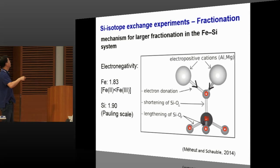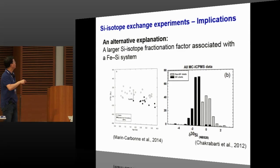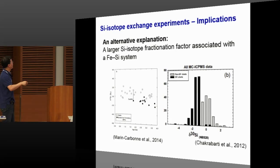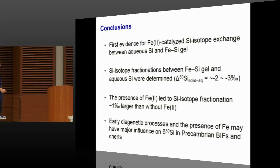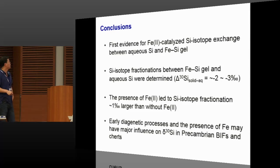Recalling those two earlier figures, our experiment seems to suggest there are different fractionation factors associated with precipitation of pure silica — as represented by the chert samples — and a larger fractionation associated with banded iron formation samples. That may be why we see lower delta silicon 30 values in the banded iron formation. In conclusion, our experiment provides the first evidence for Fe2+-catalyzed silicon isotope exchange, and we determined that the equilibrium fractionation factor between iron silica gel and aqueous silica is about 2 to 3 per mil, with the presence of Fe2+ leading to a larger fractionation factor. Our experiment suggests that early diagenetic processes in the formation of these different rock types play a major role in the delta silicon 30 values preserved in these Precambrian rocks.